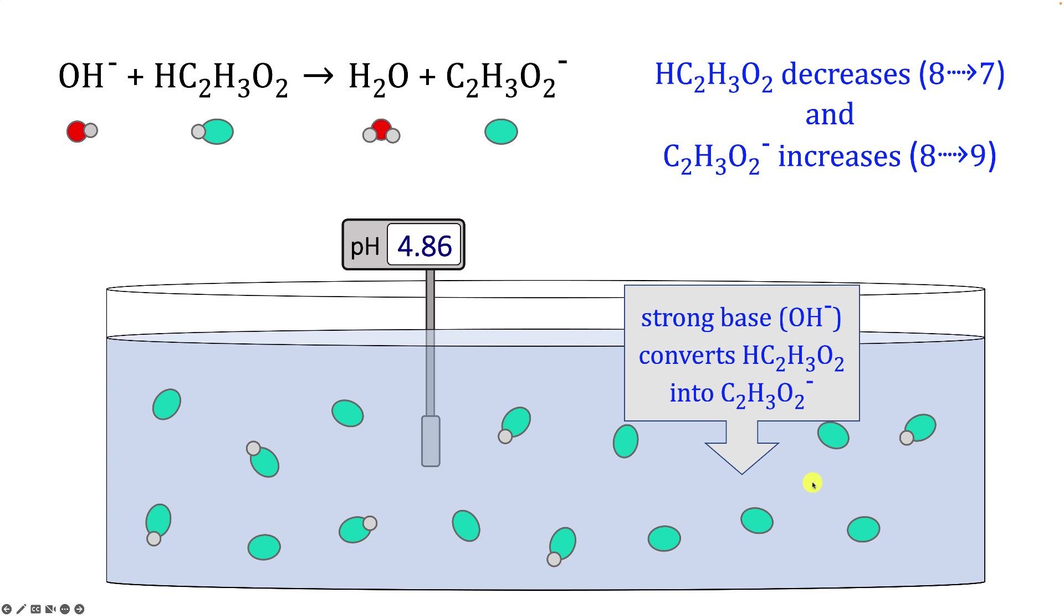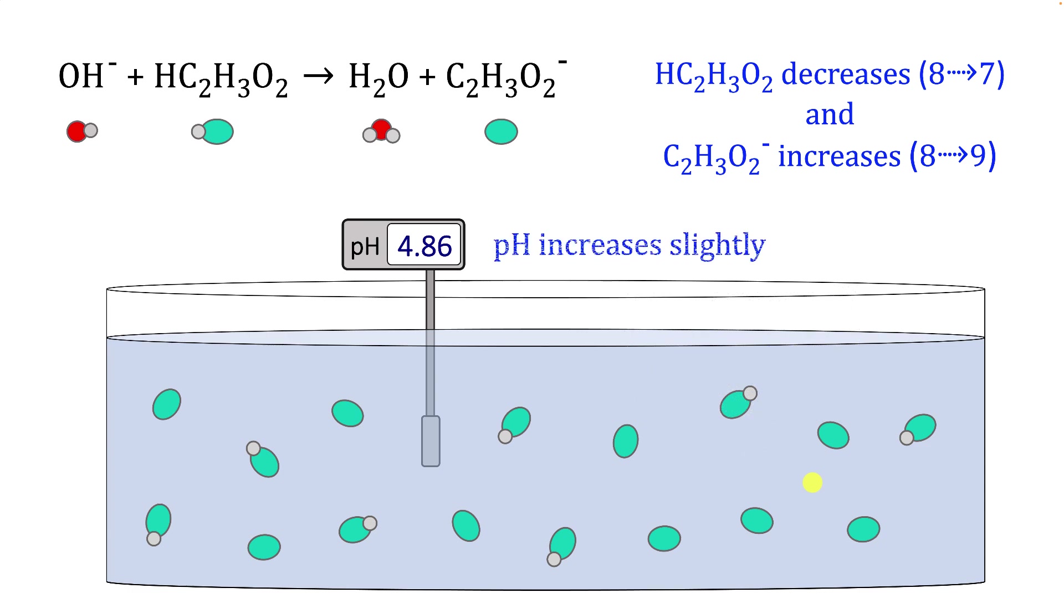So we'll remove the water that's produced by the reaction. And you might have noticed as well that the pH increased slightly from 4.75 to 4.86, and the volume of the solution increased a little bit as well due to the added strong base.